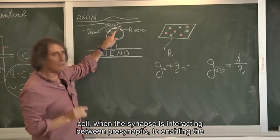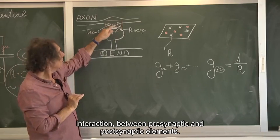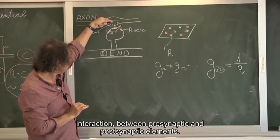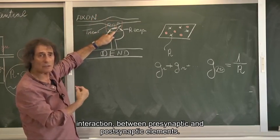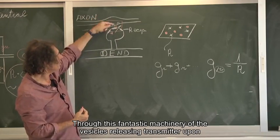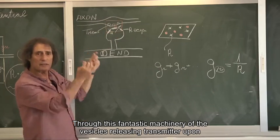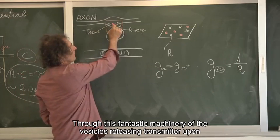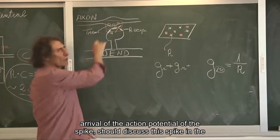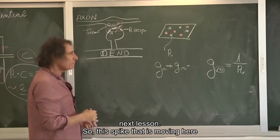In this particular region of the cell, when the synapse is interacting between presynaptic, enabling the interaction between presynaptic and postsynaptic elements, through this fantastic machinery of the vesicles releasing transmitter, upon arrival of the action potential of the spike.